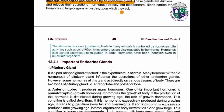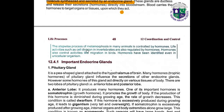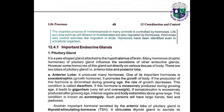The process of metamorphosis in many animals is controlled by hormones. Life activities such as cell division in invertebrates are also regulated by hormones, as are activities like migration in birds. Hormones have been identified even in unicellular organisms.